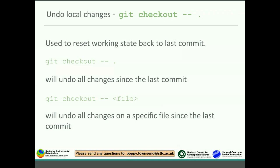To undo local changes, you can use git checkout, which resets the working state back to the last commit. You do git checkout dash dash dot, and that's essentially an undo button. The dot means everything. If you only want to undo changes on a specific file, you can specify a file name instead. So if you've edited more than one file but only want to reset one, use git checkout dash dash and the file name.